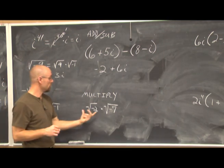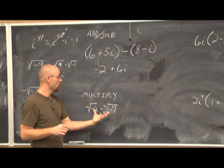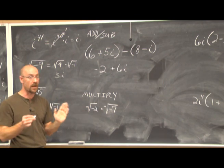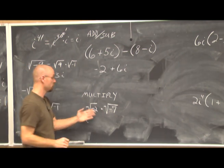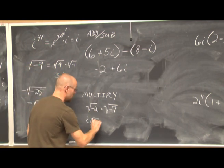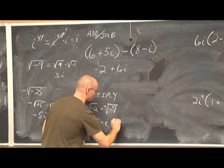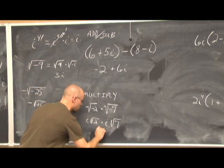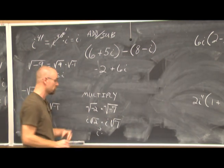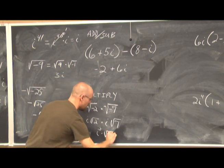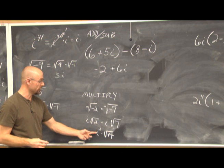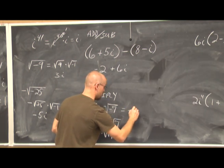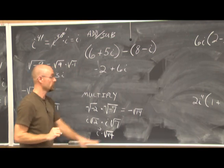When multiplying, we can't just combine square roots of negatives by saying the negatives multiply to a positive — that doesn't work in the imaginary number system. We must first pull out i from each: the square root of negative 2 becomes i times the square root of 2, and the square root of negative 7 becomes i times the square root of 7. Then i times i is i squared; the square root of 2 times the square root of 7 gives the square root of 14. Since i squared equals negative 1, the result is negative square root of 14 — a real value.